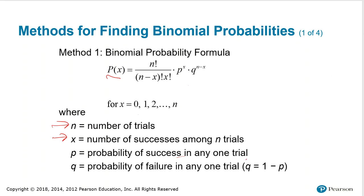and then q is the probability of failure in any one trial. So q is the complement of p, p and q add up to 1. So if you have p, subtract it from 1 to find the q.